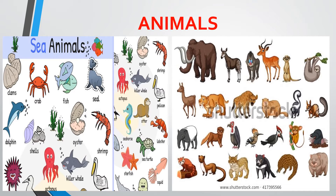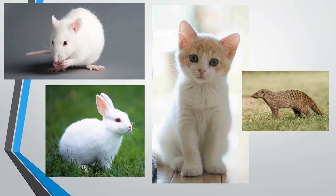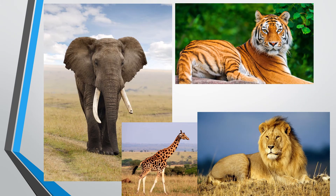Animals that live on the earth are of different size and shapes. Some animals are small, like mouse and rabbits. But some animals are big, like elephant and giraffe. Also, tiger and lion — these animals are large in size.